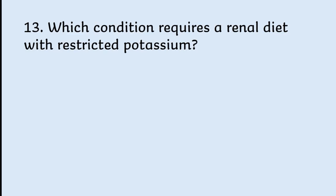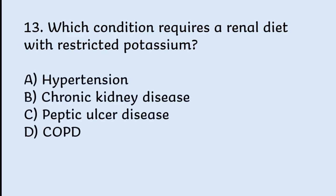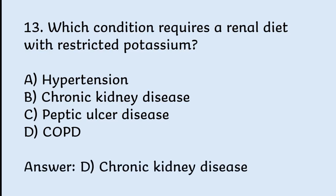Which condition requires a renal diet with restricted potassium? Options: hypertension, chronic kidney disease, peptic ulcer disease, COPD. Correct answer is chronic kidney disease.